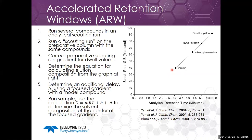Each time you get a new column you have to calculate a new delta, so if you change column sizes you need to recalculate delta, and delta is particular to a model of a prep system.